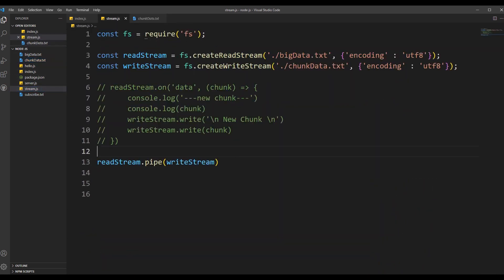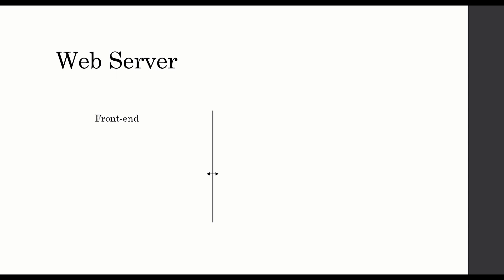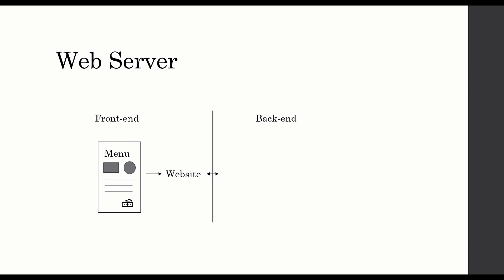Running 'node stream.js' with pipe creates chunk-data.txt just as before. That covers streams and buffers in Node.js. Now let's talk about what a web server is and understand front-end vs. back-end development.